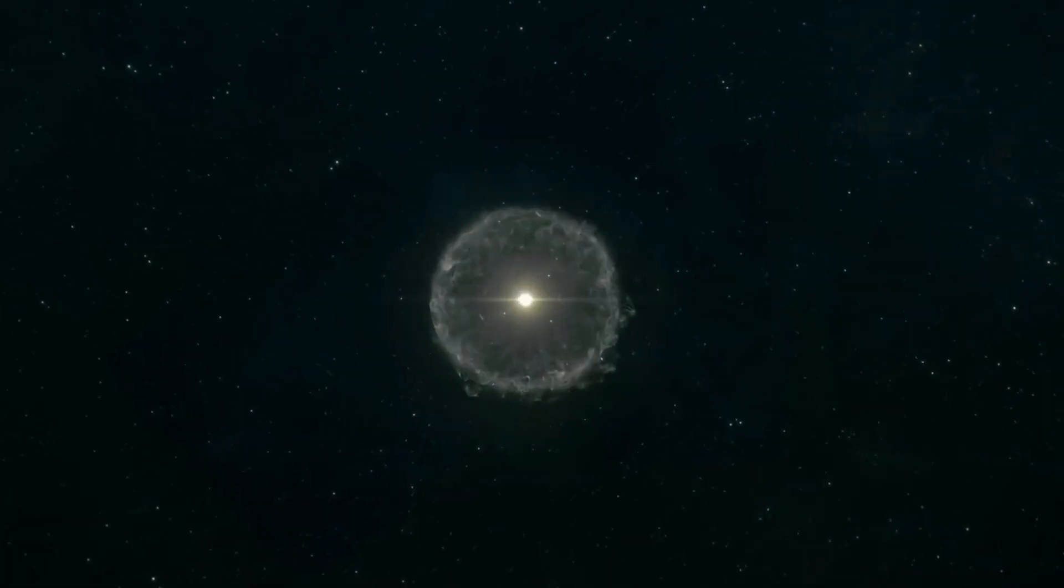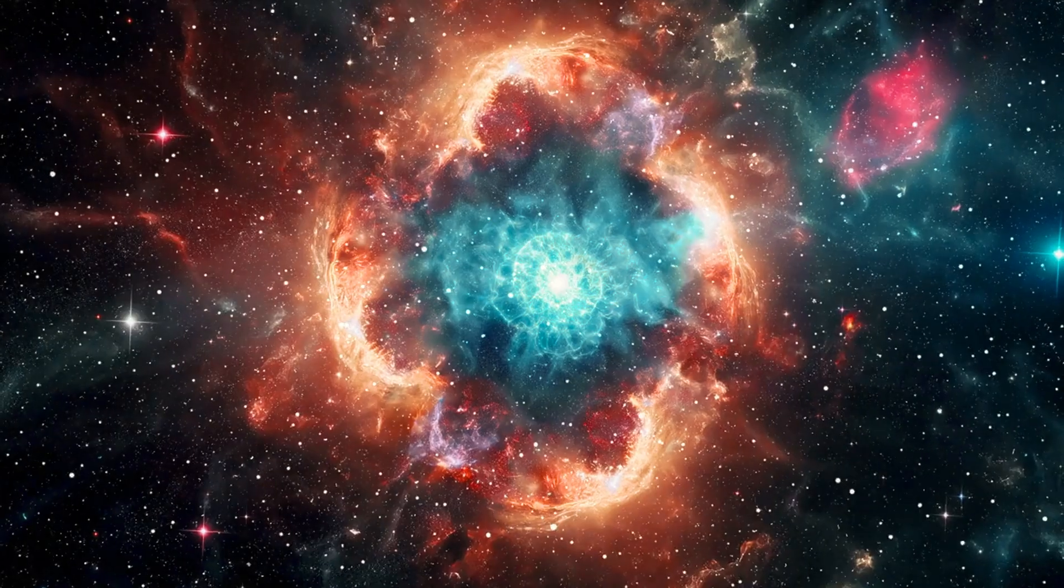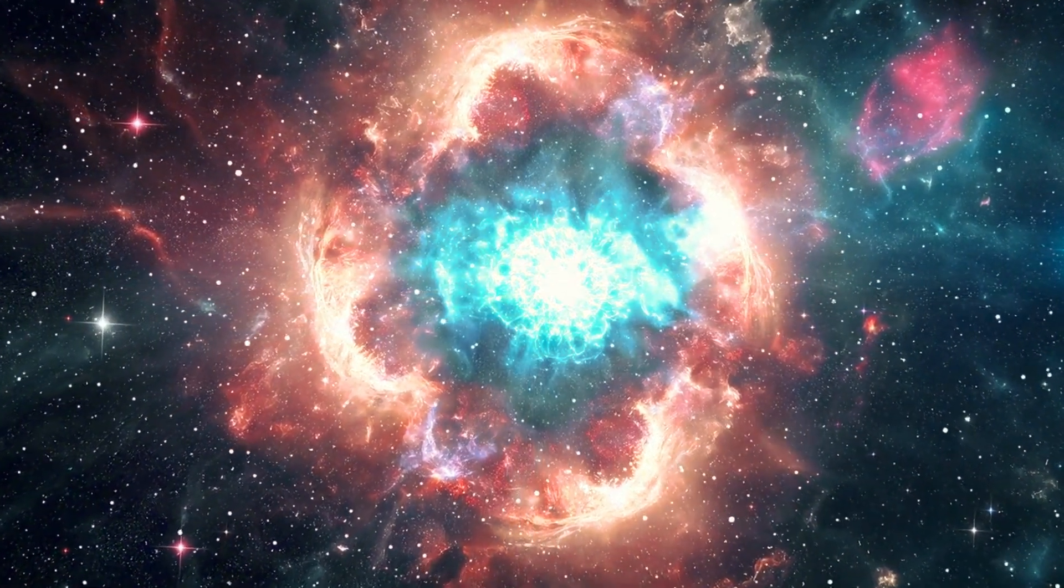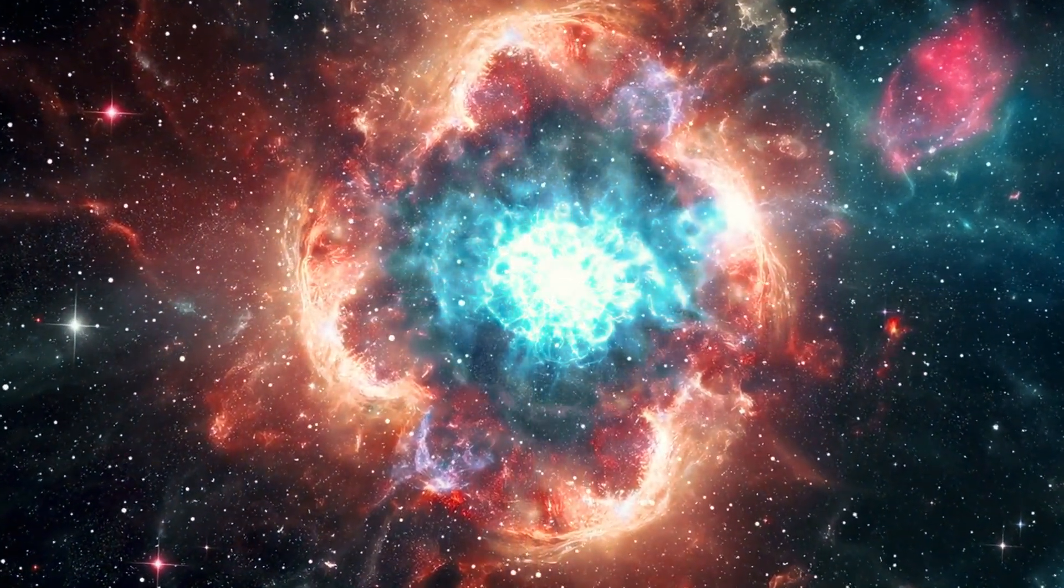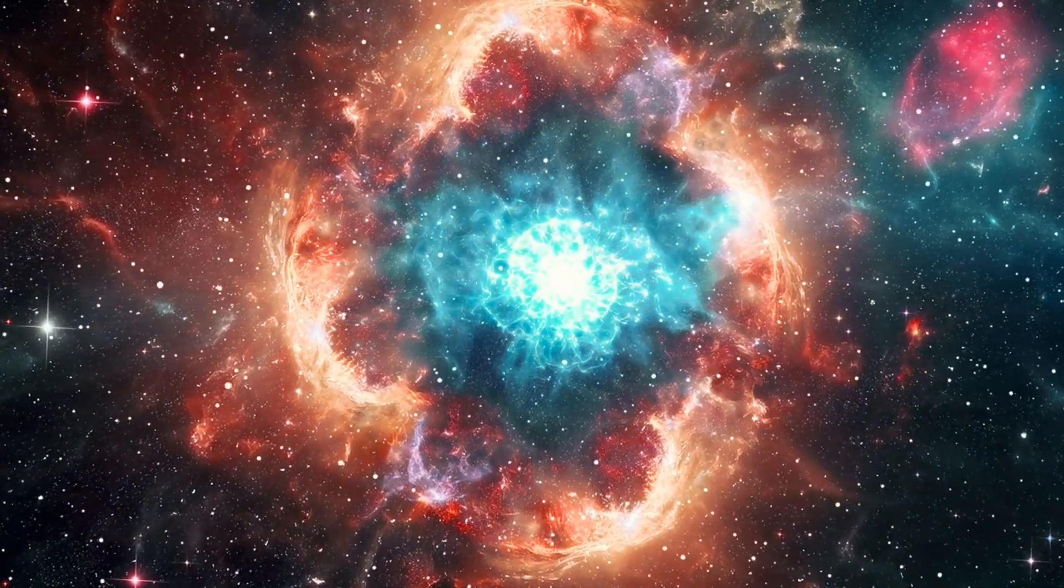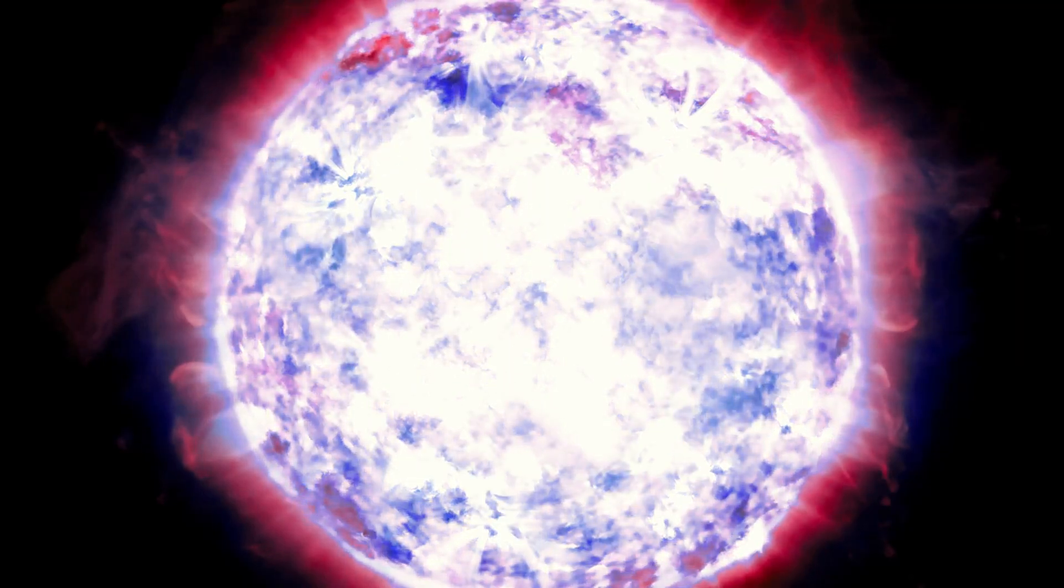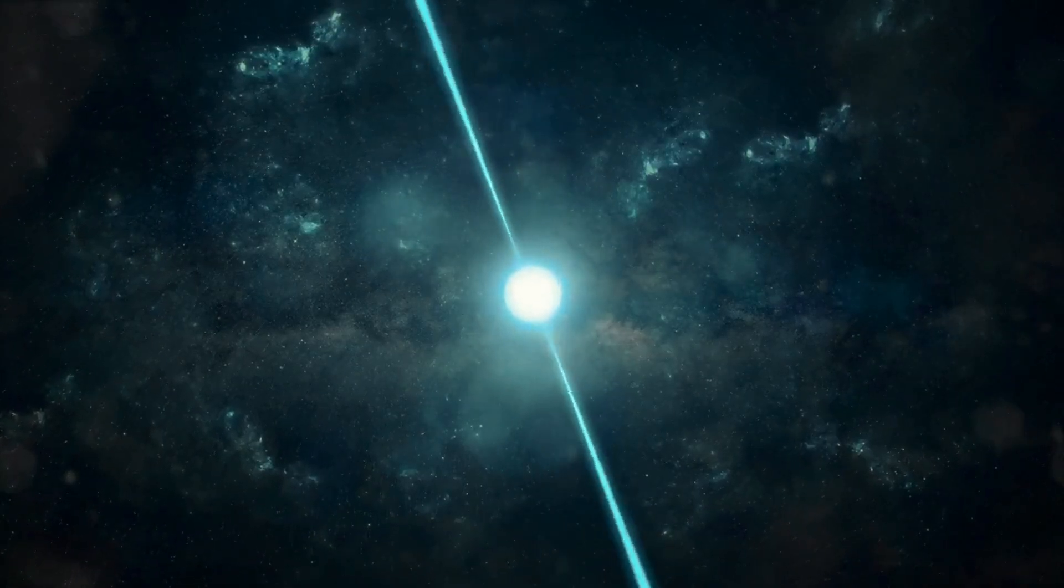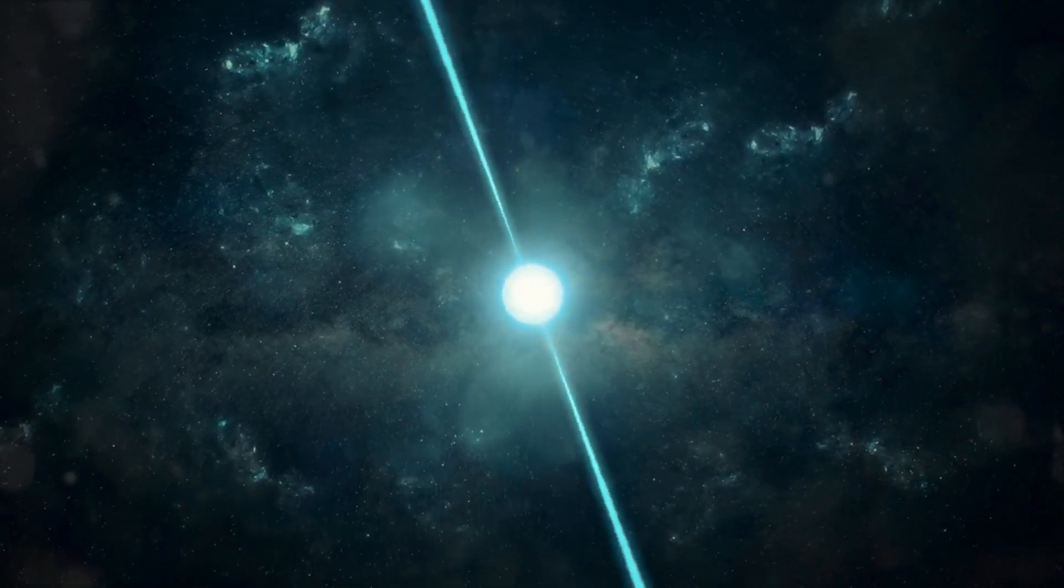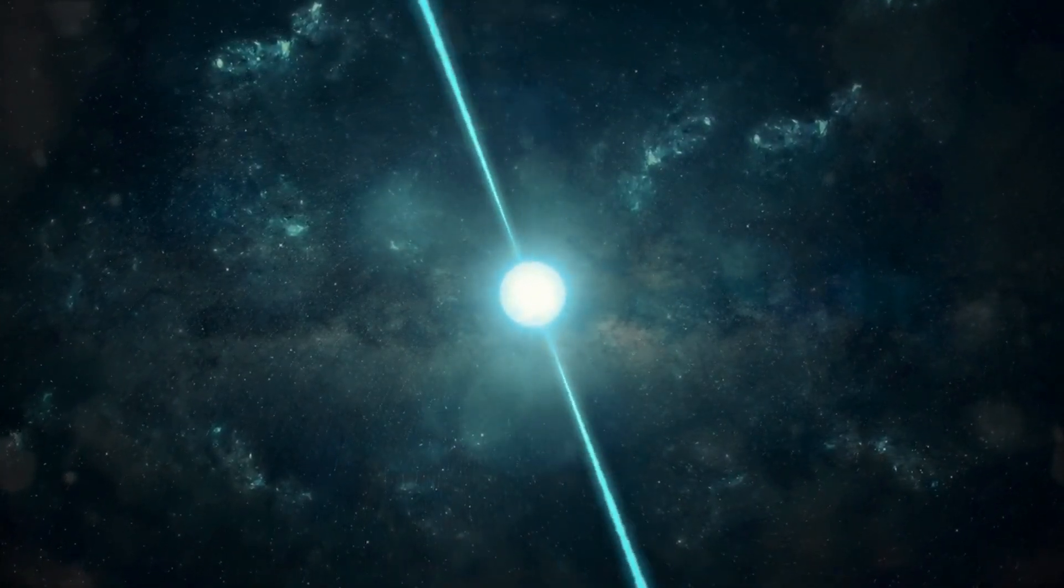Now you might be wondering, how do these cosmic weirdos form? Well, it all starts with a massive star, at least eight times heavier than our Sun. When this stellar heavyweight runs out of fuel, it goes out with a bang. Literally. The star explodes in a supernova, leaving behind a super-dense core that becomes a neutron star. But some neutron stars are overachievers. They spin incredibly fast and have just the right conditions to amplify their magnetic fields to ludicrous levels. And voila, a magnetar is born.